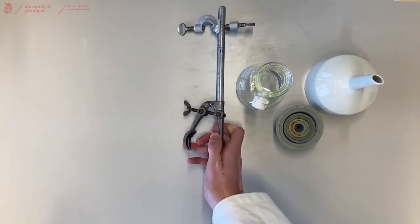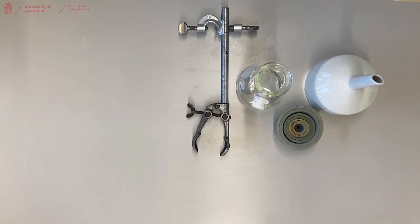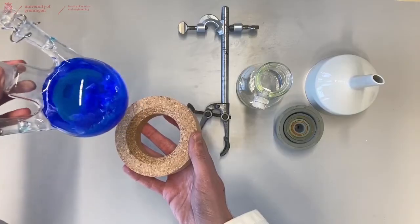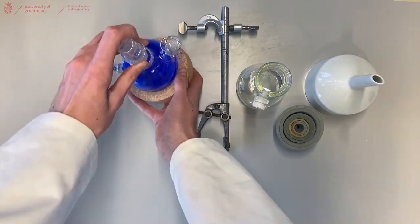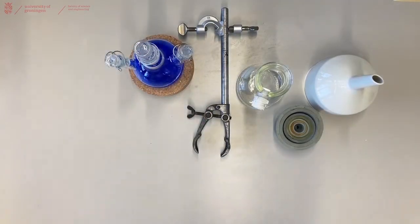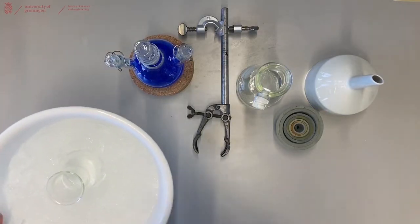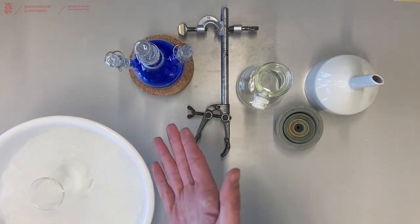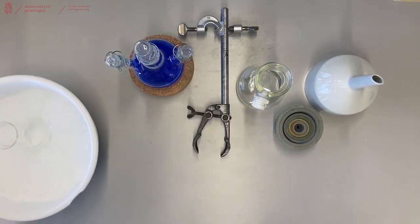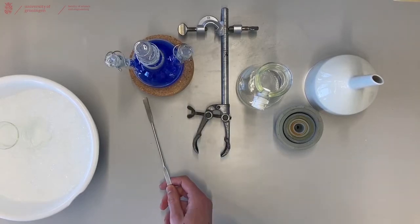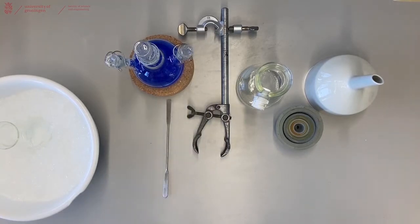Besides that, you will of course need the solids that you want to filter - these are our crystals from the recrystallization video. Generally you need to wash your crystals using a cold solvent that's the same as the solvent used during your crystallization. It's always handy to have a spatula at hand if you need it to get the solids out of your flask.